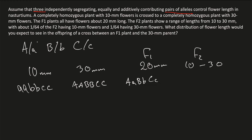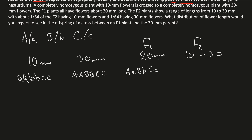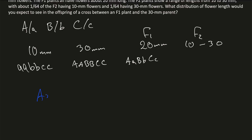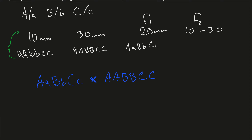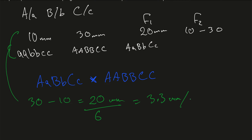Now, what distribution of flower length would you expect to see in the offspring of a cross between the F1 plant and the 30mm plant? The F1 plant is heterozygous for all of them, and the 30mm parent plant is homozygous dominant. Before doing the cross, we want to see how much each allele contributes to the length. The parents are 30mm and 10mm, so the difference is 20mm, divided by 6 alleles total — giving us around 3.3mm per dominant allele.